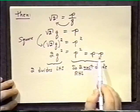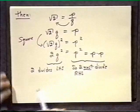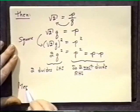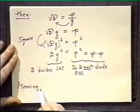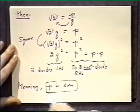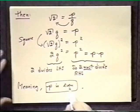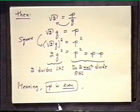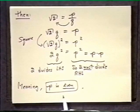Which means p is even. So it has a factor of 2. We've observed this from our little argument. Let us continue.